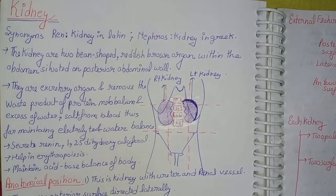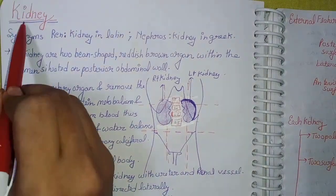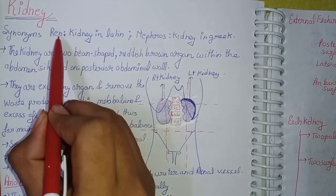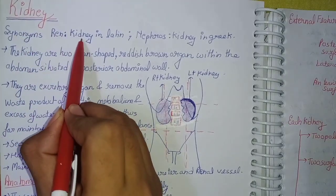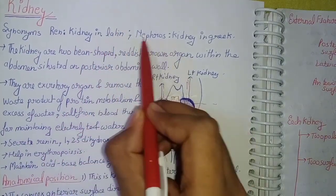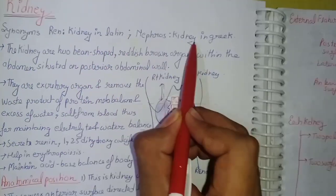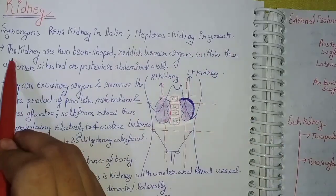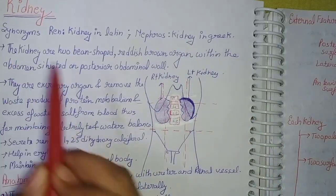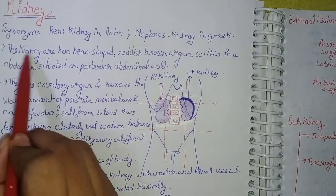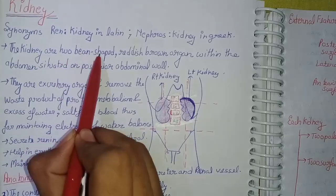In this video I'm going to talk about the kidney. Coming to today's topic — kidney. Its synonym is 'ren', which is kidney in Latin, and 'nephros', which is kidney in Greek language.